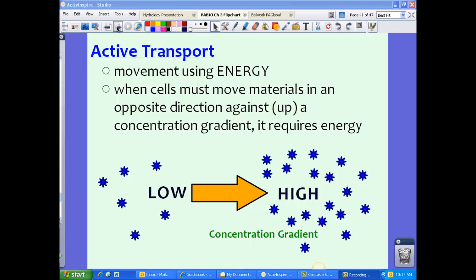So remember, passive transport is movement without using energy. Now we're going to talk about active transport, which is the movement of substances using energy. When cells have to move materials in the opposite direction, meaning it has to move up the concentration gradient, it has to use energy to do that.